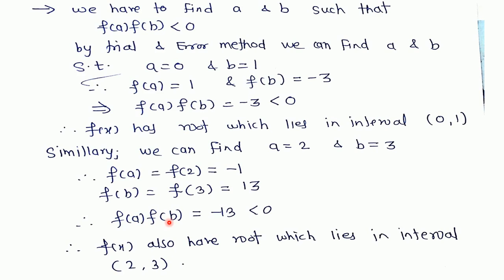Then f(a) × f(b), that is f(2) × f(3) = -13, which is less than 0. Therefore f(x) has a root that lies in the open interval (2, 3).